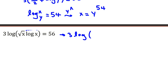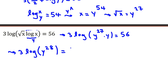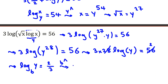Substituting x = y^54: √x = x^(1/2) = y^27, so log(√x) = log(y^27) = 27·log(y), and log(x) = y. So the first equation becomes 3·(log(y^27) + log(y)) = 3·log(y^28) = 56. By the power rule: 3·28·log(y) = 56. Dividing both sides by 28: 3·log(y) = 2, so log(y) = 2/3.